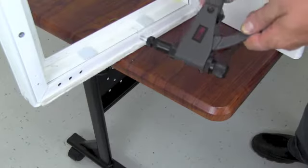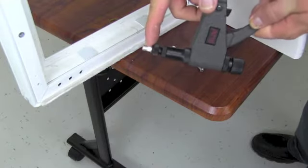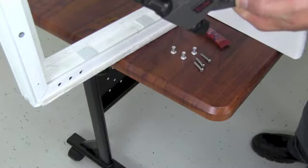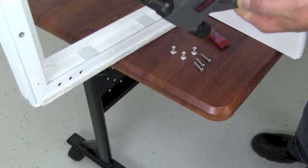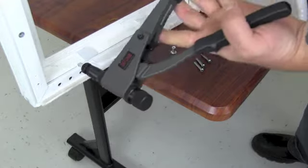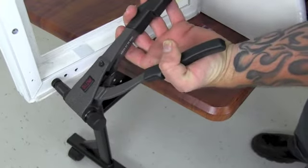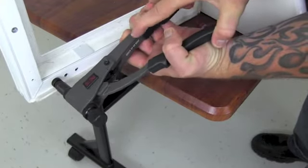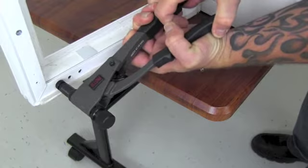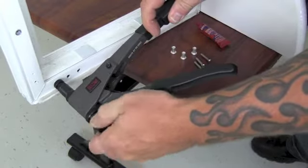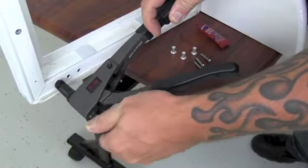Take the pop rivet gun with the threaded insert already attached. Make sure that the insert is right at the end of the screw inside. Slide it into the hole and compress the pop rivet until you feel it get snug. Back the screw off.